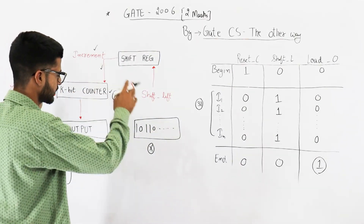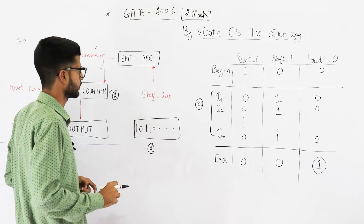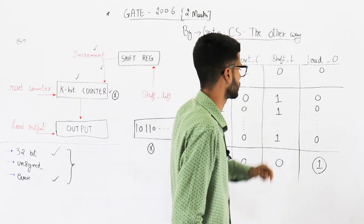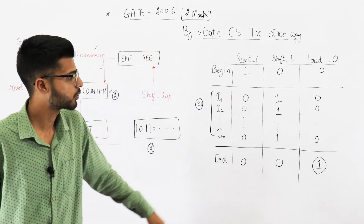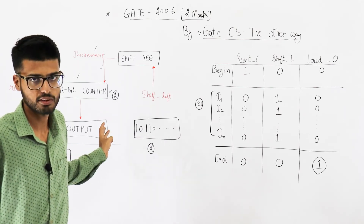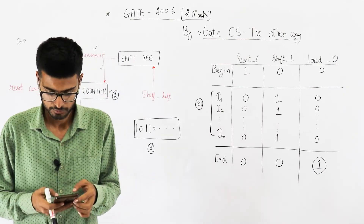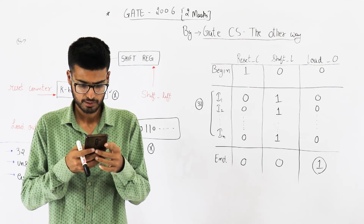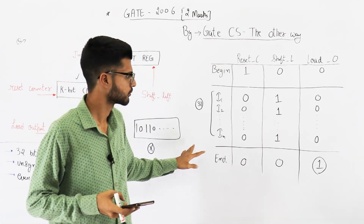At the beginning, to initialize the circuit for a new input, you just reset the counter — rest of the two signals are zero. Then you analyze 31 bits, and at the end you output the count to the output register or screen. The final answer is option D: k=5, n=31, control word = 0, 1, 0.